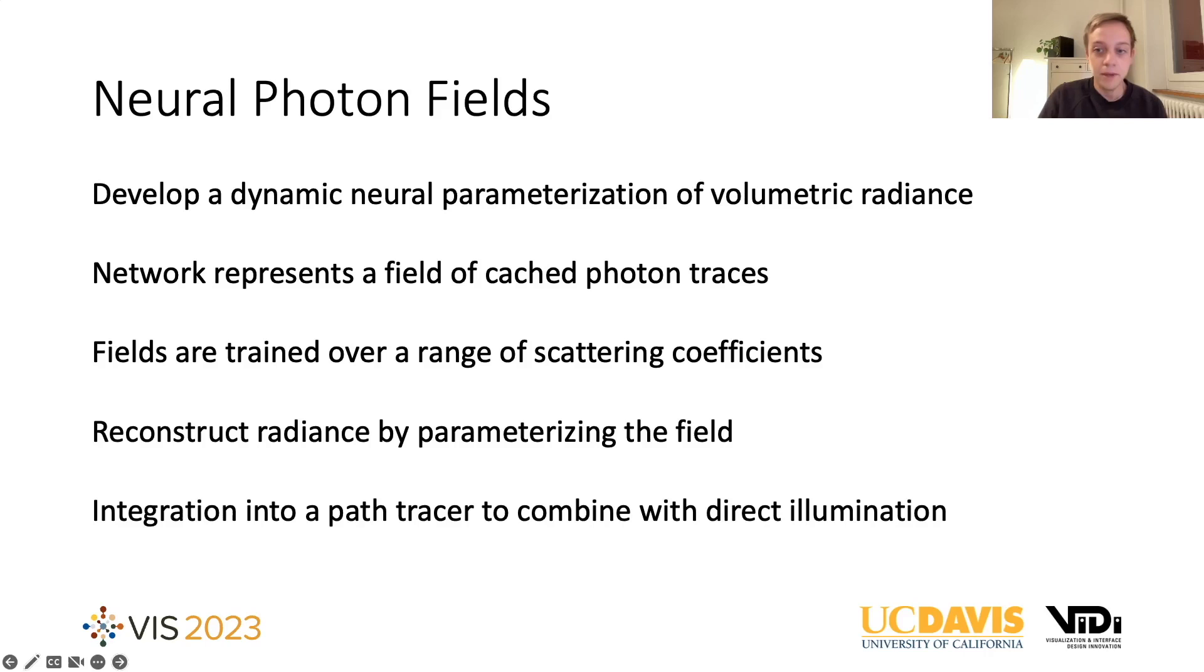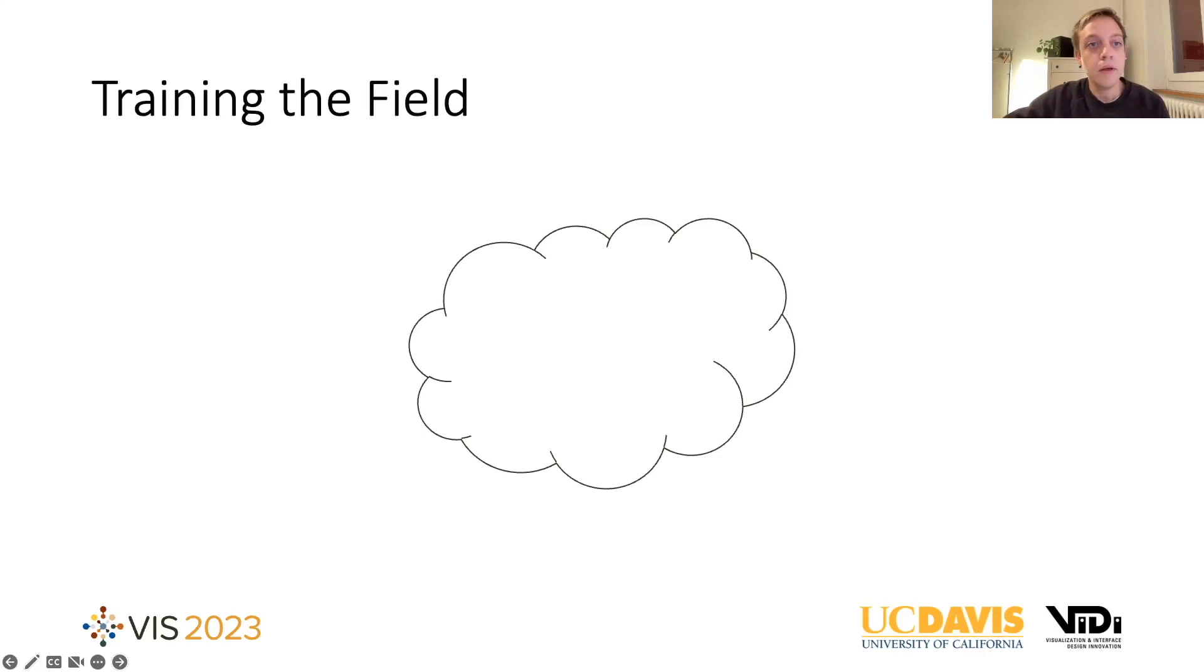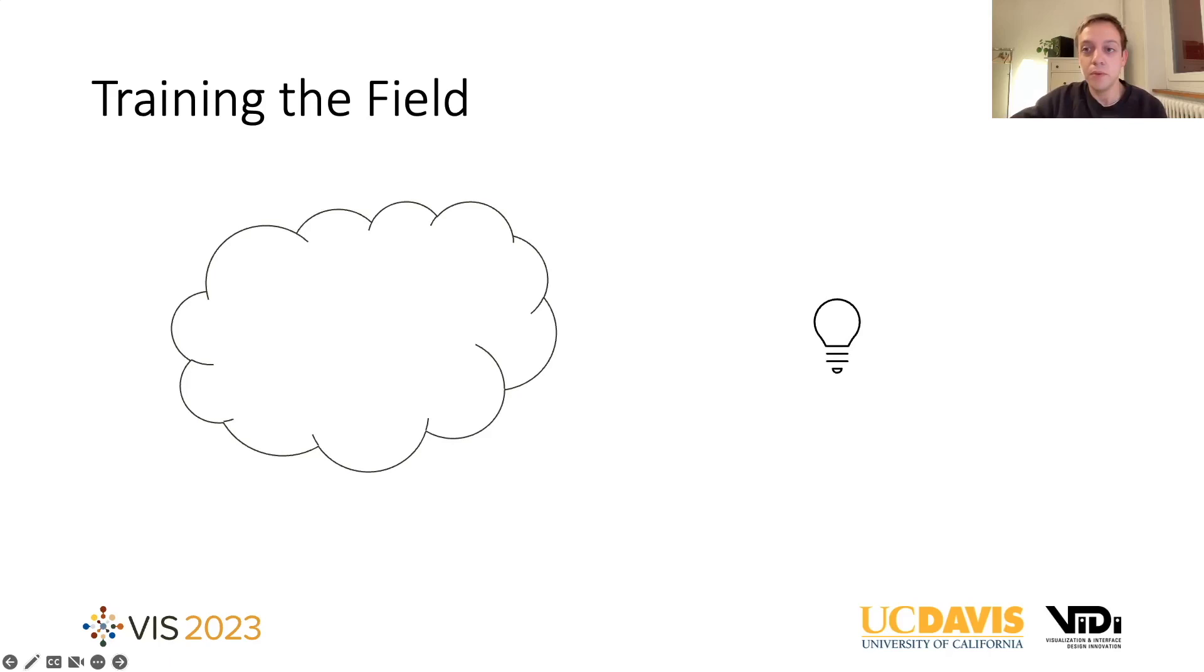Let's look at how we train these representations. So to train the photon field, we start with a volume dataset as represented here by this cloud. We then add a light source to the scene and note that we support multiple lights. We show a single one here for illustration purposes only. And in the first step, we generate photons originating at the light source. We then track them through the scene into the volume. And at certain points, the photons interact with the medium.